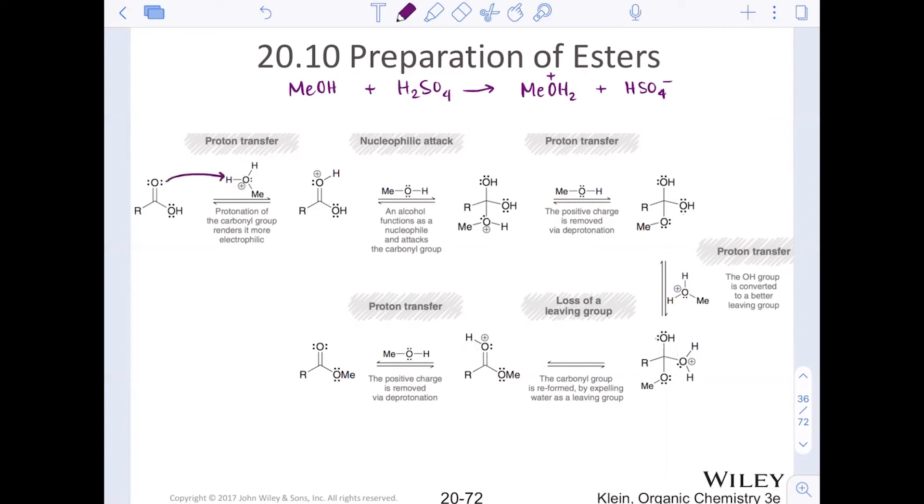So protonate the oxygen of the carbonyl, similar to what we had done before in the previous chapter. What does this do? It makes the carbon of the electrophile more electrophilic. Now our weak nucleophile here, methanol, can come in and attack that carbon, kicking up a lone pair. That creates a new carbon oxygen bond and the tetrahedral intermediate. Now a second equivalent of methanol will come in and deprotonate that nucleophile so that it is neutral.